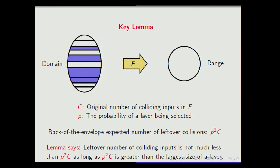The lemma says you will get approximately p²C collisions, but there is a technical condition: p²C must be bigger than the largest layer size. If one layer takes up almost the entire oval, everything hinges on whether that one layer is selected — you'd get no collisions with high probability or astronomically many with low probability. So once the expectation p²C reaches the size of the largest layer, the lemma applies.